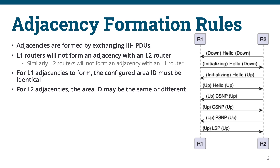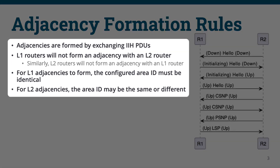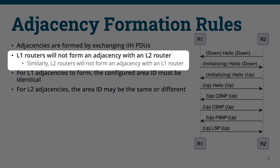On the left, we have some constraints for neighbor formation. First, Level 1 routers cannot form an adjacency with Level 2 routers. Similarly, the converse is also correct.